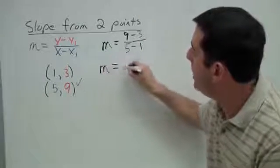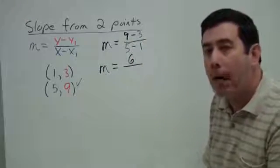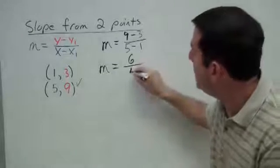Let's do our arithmetic. On the top, 9 minus 3 is 6. On the bottom, 5 minus 1 is 4.